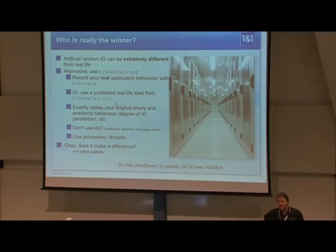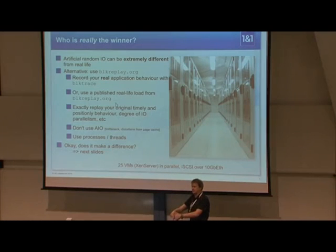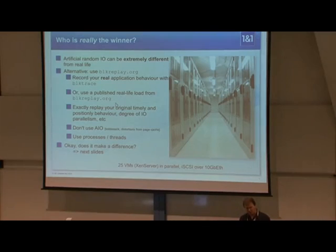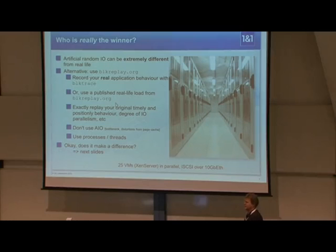That was an artificial load. Now we turn to a real benchmark with a real-world load. The scenario is 25 virtual machines, a SAN server in parallel, over iSCSI to one central storage box — 25 instances of block replay in parallel. The load is from a natural one, but we selected the peaks. It's also a kind of overload scenario, but from real life — not exactly random, but of course there are random parts inside it. It's recorded by blktrace, which is already in the kernel and has tools around it.